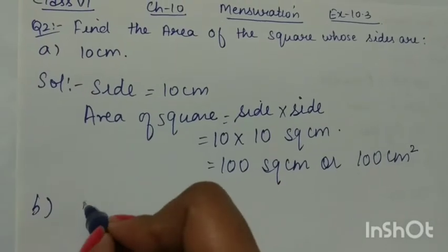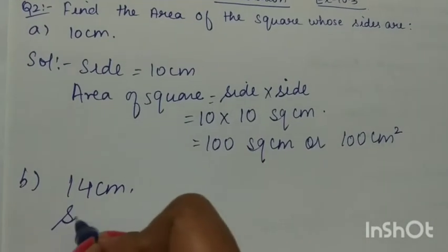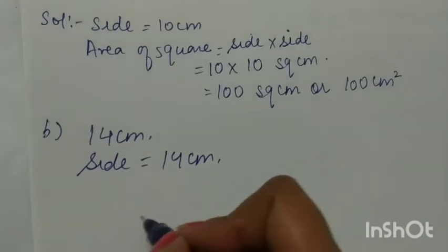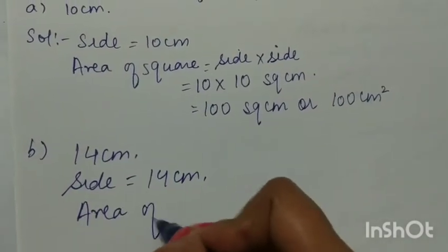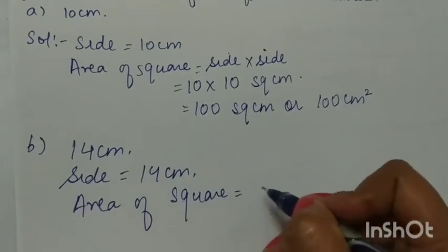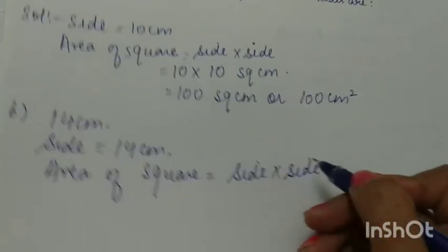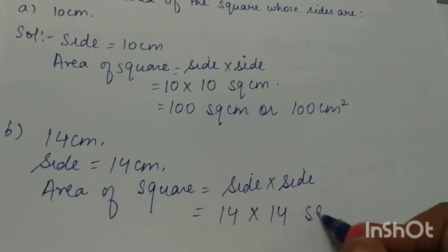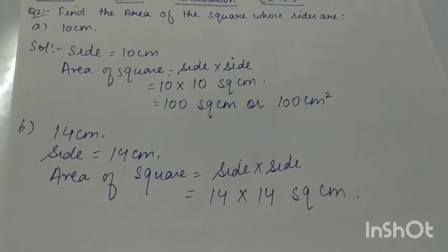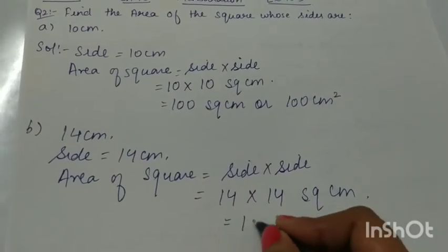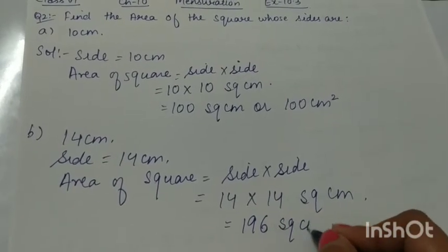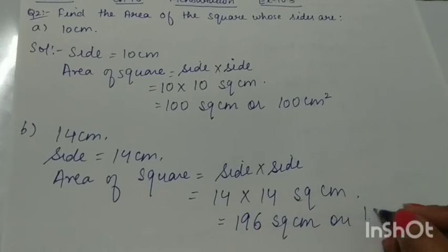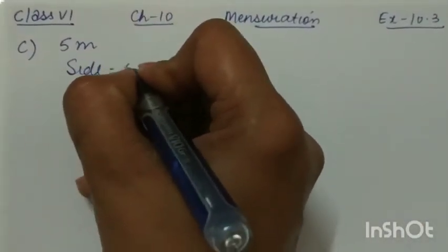Part b: the side is 14 centimeters. We have to find the area of the square, and area of a square is side multiplied by side — that means 14 multiplied by 14 square centimeters. 14 times 14 is 196, so this will be 196 square centimeters, or you can write 196 centimeter square.